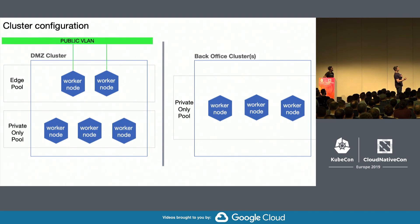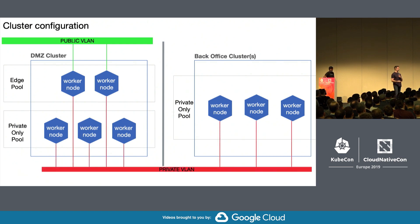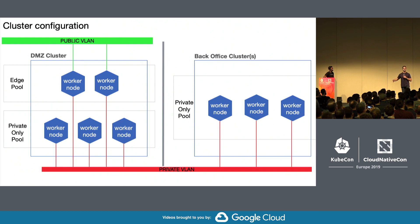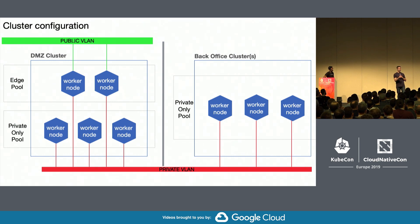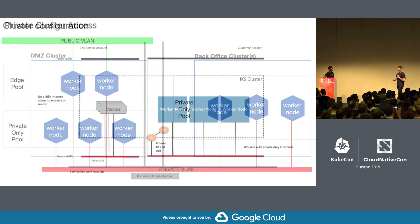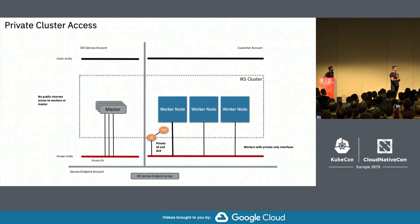The interesting thing about this architecture is that those edge pools are the only ones that have access to a public network. The others have access only to a private network — true of both the DMZ cluster and the back office clusters. The back office clusters have no public internet access at all. There's no inward traffic coming into that back office cluster, and public internet-facing traffic cannot emanate from those clusters either. They all have to be controlled through the DMZ cluster. This is the reference architecture we set up.